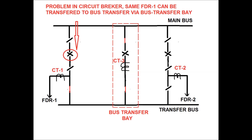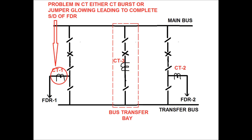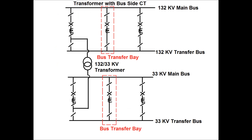For line side CT, if a problem occurs in the circuit breaker of feeder one, then feeder one can be diverted to the bus transfer bay and power can flow uninterrupted to feeder one via the main bus and transfer bus. However, if a problem occurs in the CT — for example, the CT bursts out or there is a jumper glowing in the CT of feeder one — then the same feeder cannot be diverted to the bus transfer bay. That is the main disadvantage of the line side CT.